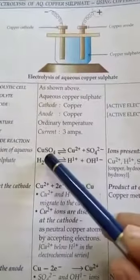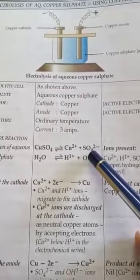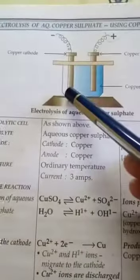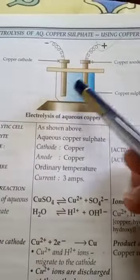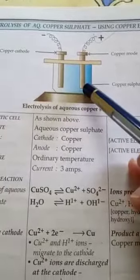When you pass electricity, then copper sulphate will dissociate into copper ions and sulphate ions. Remember here we have used copper electrodes, meaning active electrodes are used here.